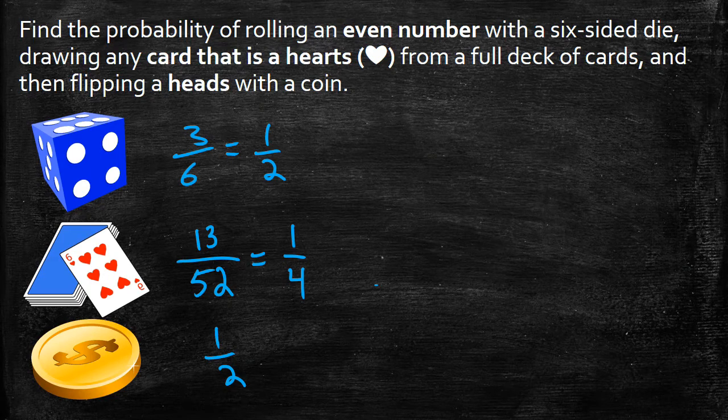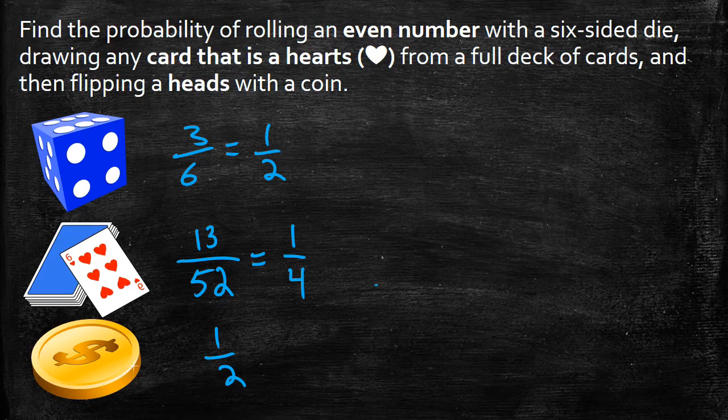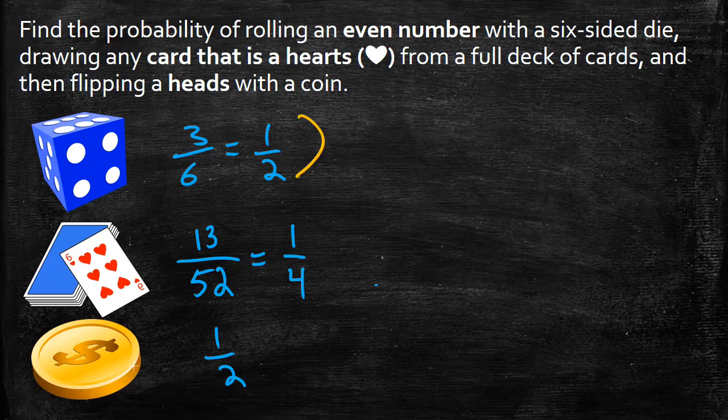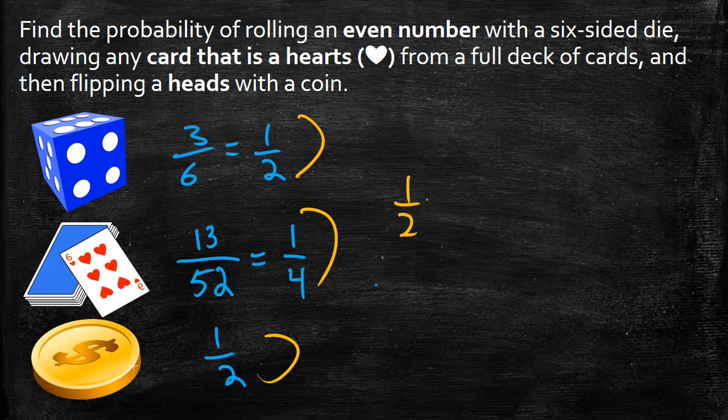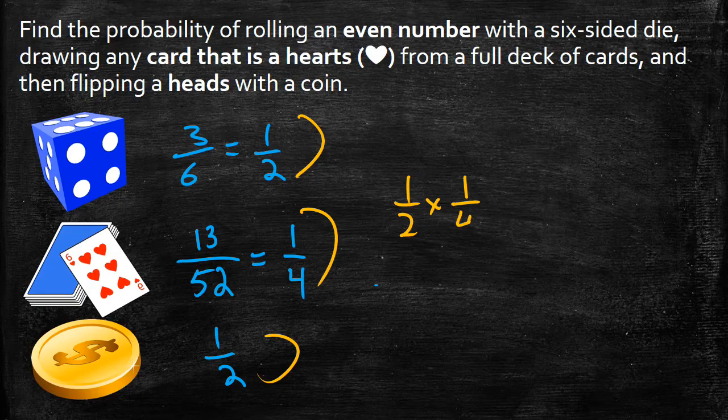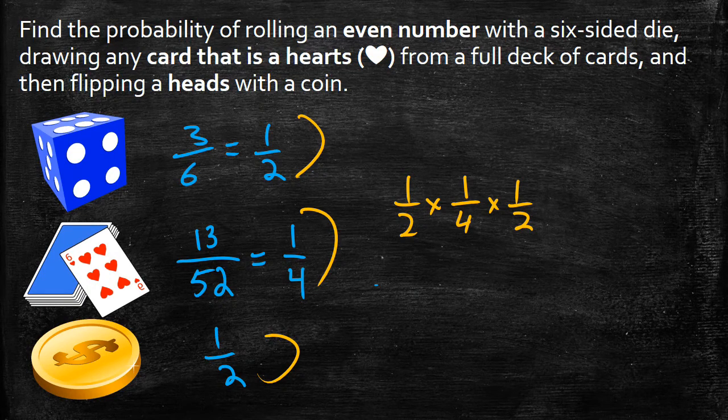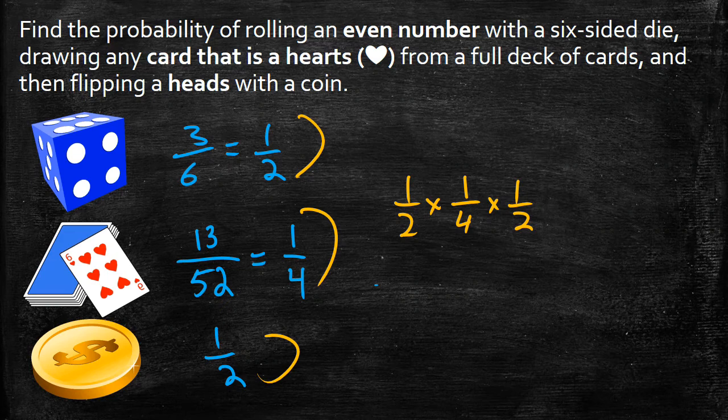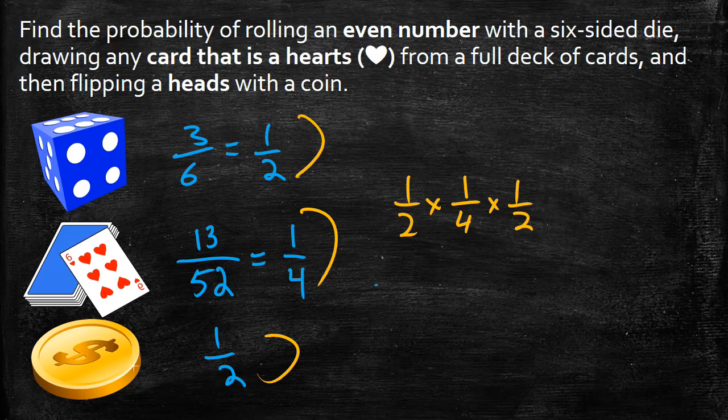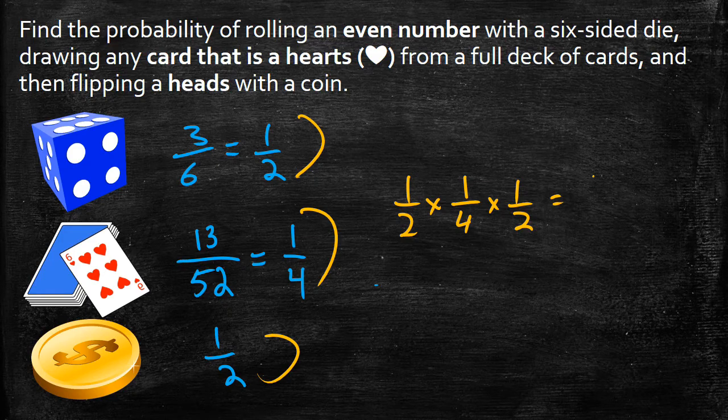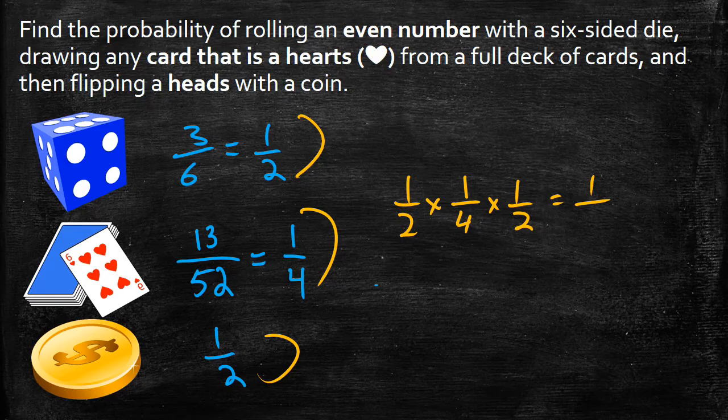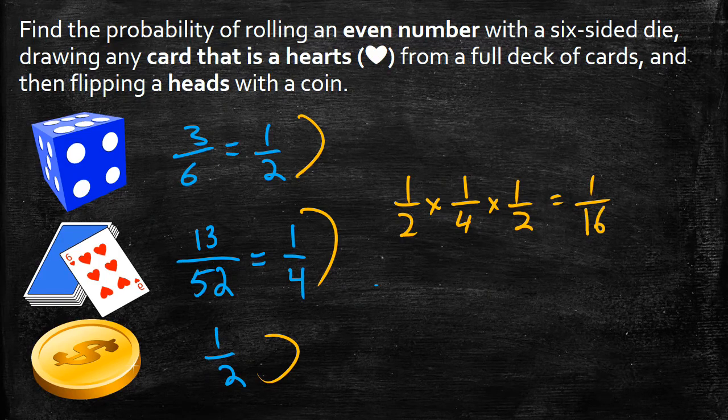Now to find the probability of rolling an even number, a heart, and a heads, I can take all these values and multiply them together. So I can go 1/2 times 1/4 times 1/2. And that's going to give me, just like with all of our fraction multiplication, I'm going to multiply my numerators, which is 1 times 1 times 1, give me a 1 on top, over 2 times 4 times 2, which is 16 on the bottom.